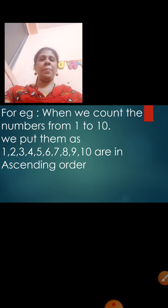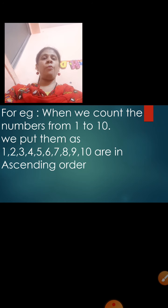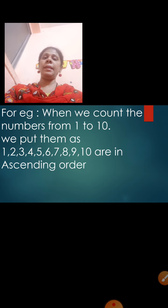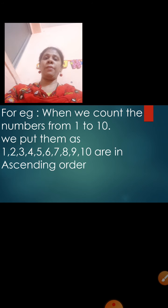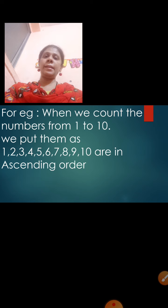For example, when we count the numbers from 1 to 10, we put them as 1, 2, 3, 4, 5, 6, 7, 8, 9, 10. They are in ascending order because we have started from the smallest number to the biggest number. 1 is the smallest number and we started from 1 and finished at 10.